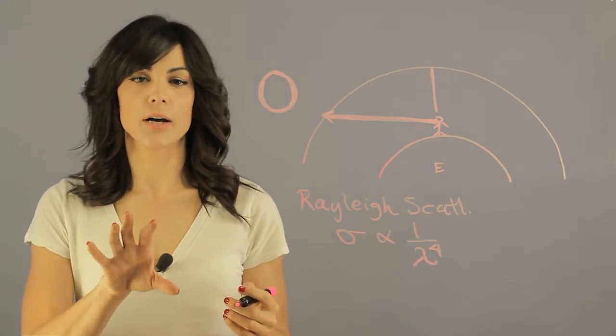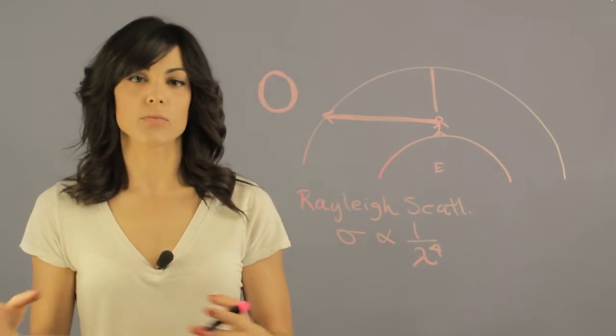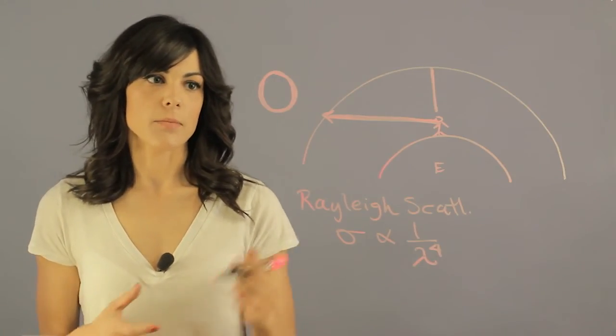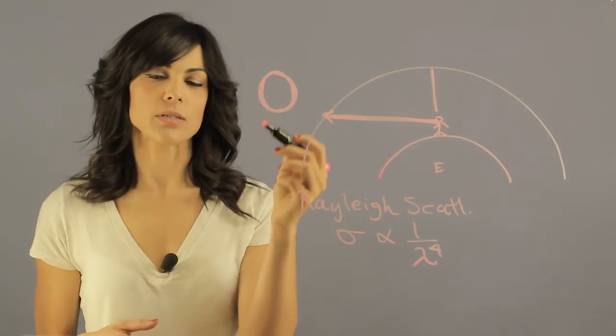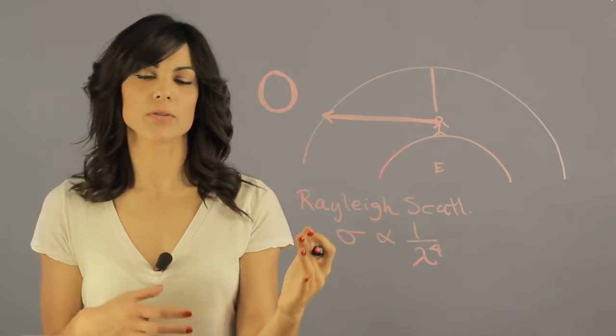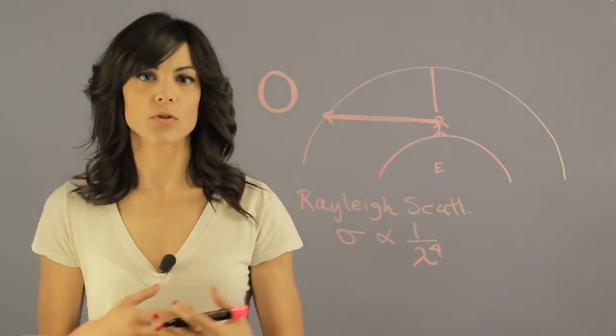It means that by the time that you're actually seeing the moon, all the blue has been scattered away and what you're now seeing is what's left over, and those are the red wavelengths.